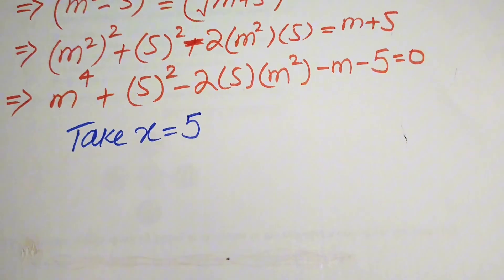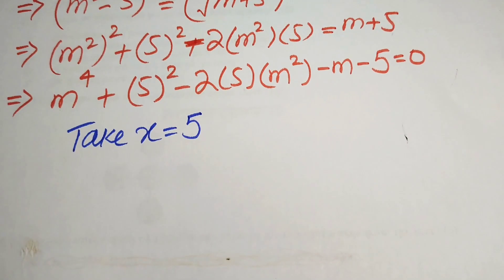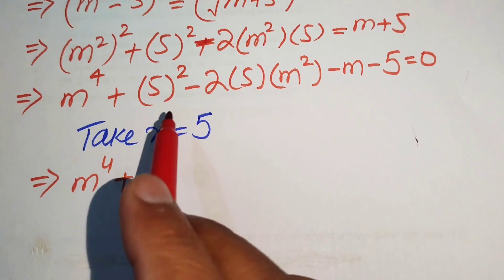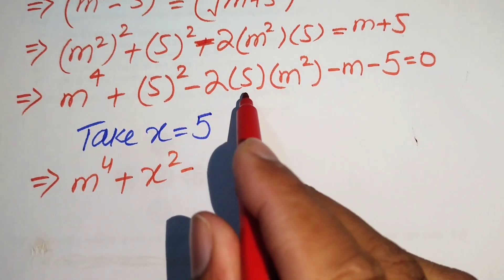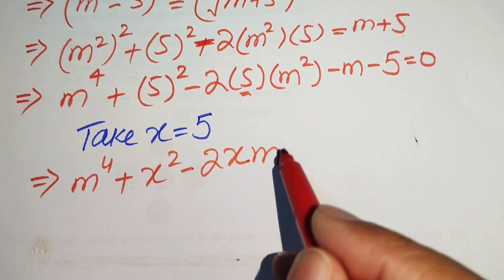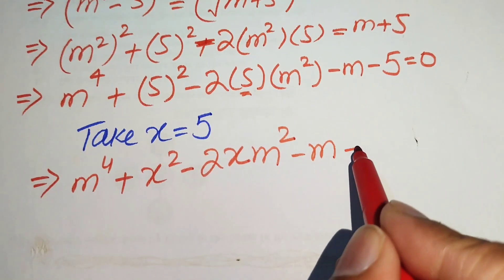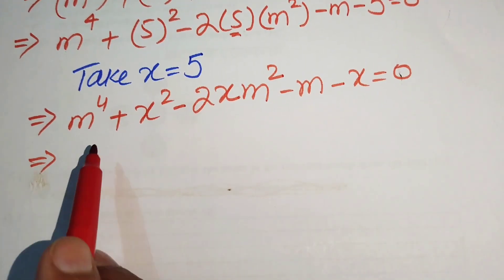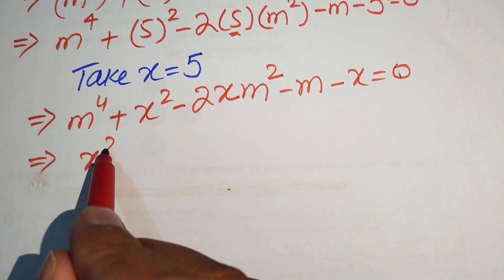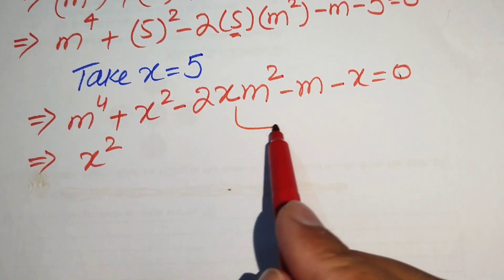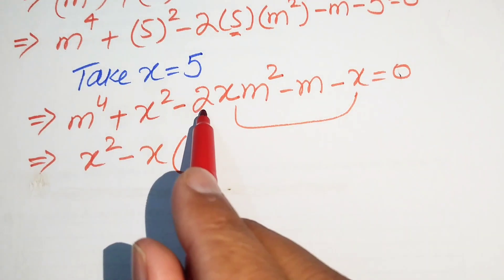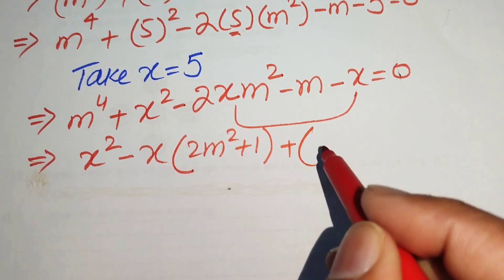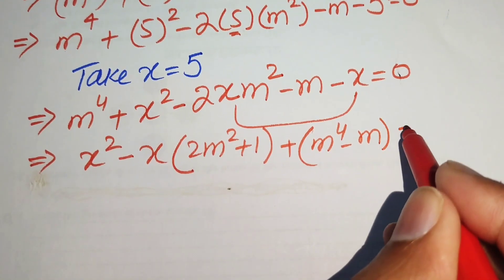When we take 5 equals x, our equation is written as: m⁴ + x² - 2x·m² - m - x = 0. We rearrange this equation in terms of x. Writing x² first, then taking x common from the x terms, we get: x² - x(2m² + 1) + (m⁴ - m) = 0.